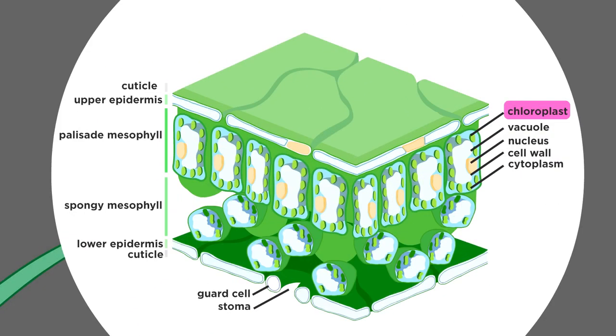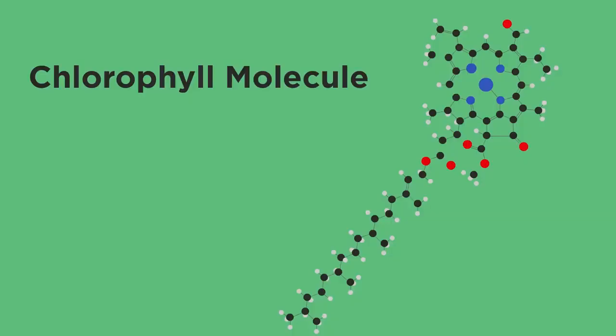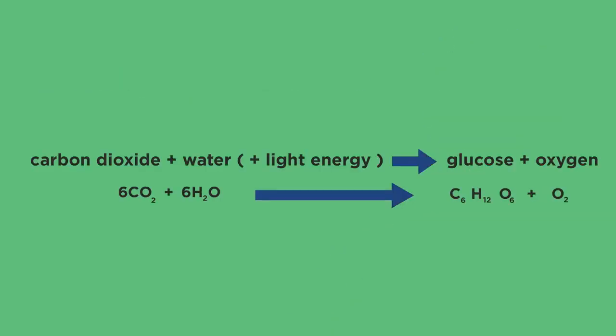Photosynthesis happens in leaf cells. They contain tiny organelles called chloroplasts, which contain a green substance called chlorophyll. Chlorophyll molecules sit on the surface of the chloroplasts and capture light energy from the sun, which is fundamental for photosynthesis.